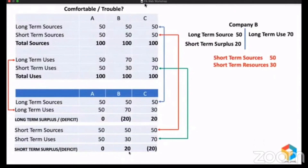But if you look at Company C, they raised 50 million long-term, spent only 30 million, and had a surplus of 20 million. That surplus of 20 million, along with short-term funds of 50 million, created short-term use of 70 million. And looking at it from the other side, within one year they are supposed to pay 50 million, and for paying that 50 million, the resources they have are 70 million. That's why we say Company C is in a comfortable situation.